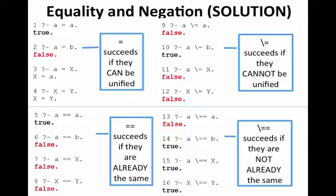Similarly, in number four, can X be unified with capital Y? Those are both variables. And Prolog, remember, always tells me what the consistent set of variable bindings is if it has one. So yes, X can be unified with Y.